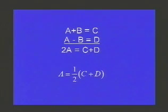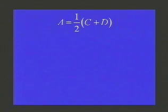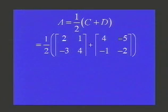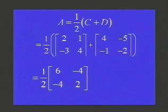Next, I just want to get A by itself. A is one half of C plus D. Since A is one half of C plus D, and I know C and D, I then plug in C and D. Add the corresponding entries again, since that's in parentheses. So I got 6, negative 4, negative 4, 2, and I want to multiply that by a half.